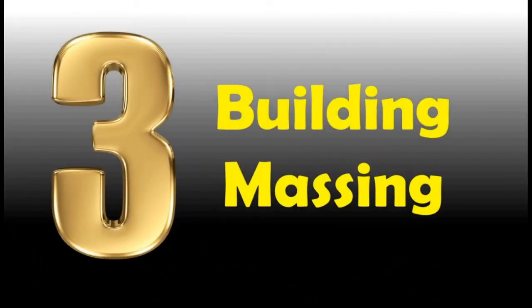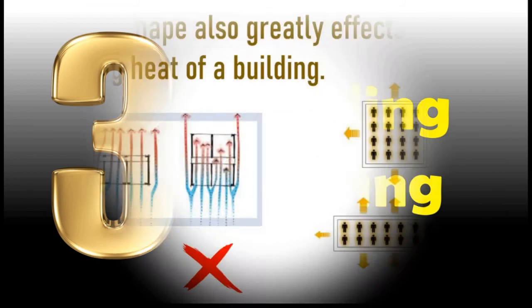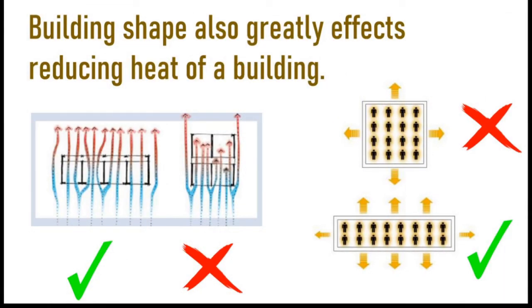Number 3. Building Massing. House shape also greatly affects reducing heat of your building. Thin long houses can cool their inside compared to the other house shapes because thinner buildings lose more of their internal heat to the outside. In houses which have more volume inside, it will get heated quickly. These houses air quality also not good.